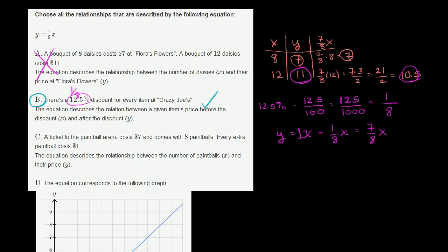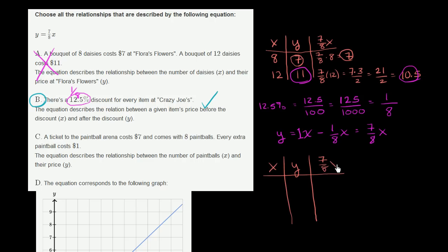Let's look at Scenario C. A ticket to the paintball arena costs $7 and comes with 8 paintballs. Every extra paintball costs $1. The equation describes the relationship between the number of paintballs x and their price y. When x equals 8 paintballs, the price is $7. And 7 eighths times 8 is indeed 7. So for this data point, y equals 7 eighths x holds.